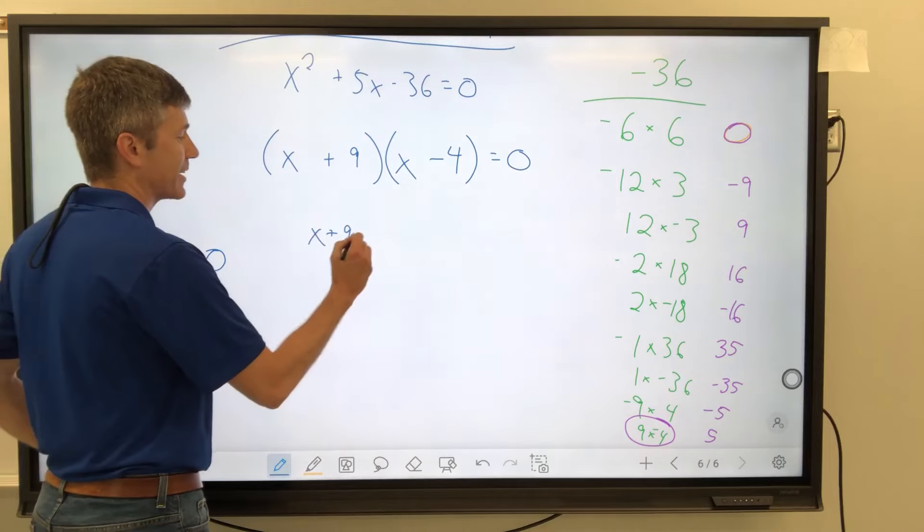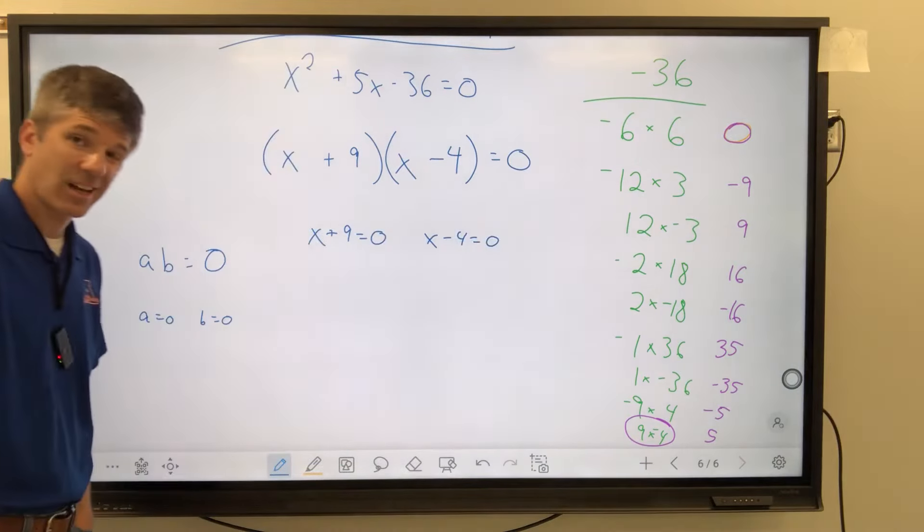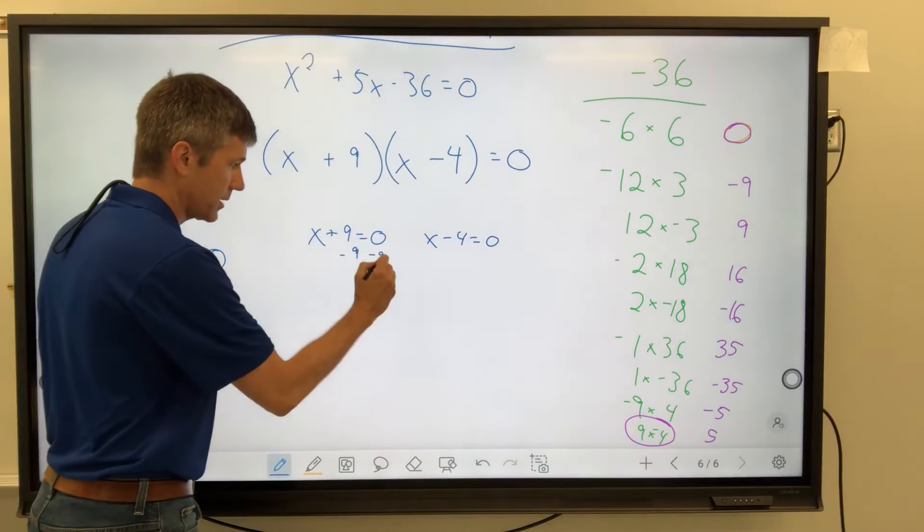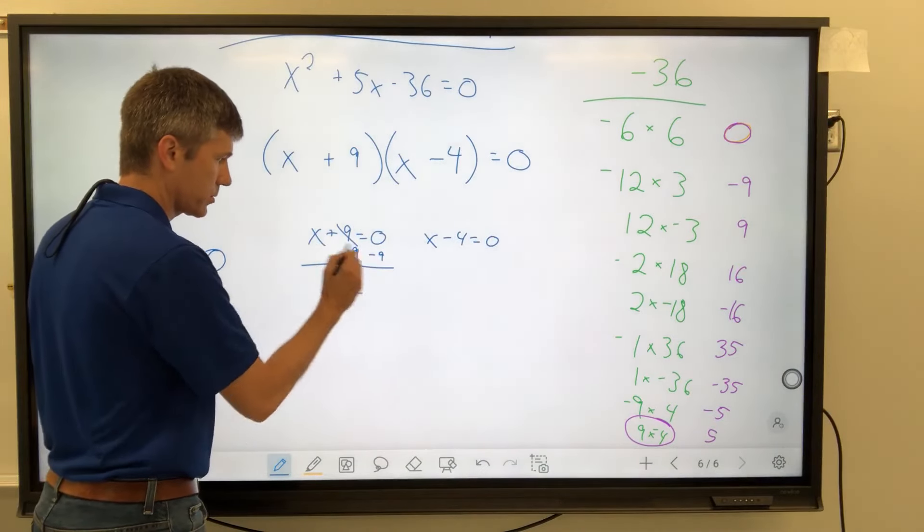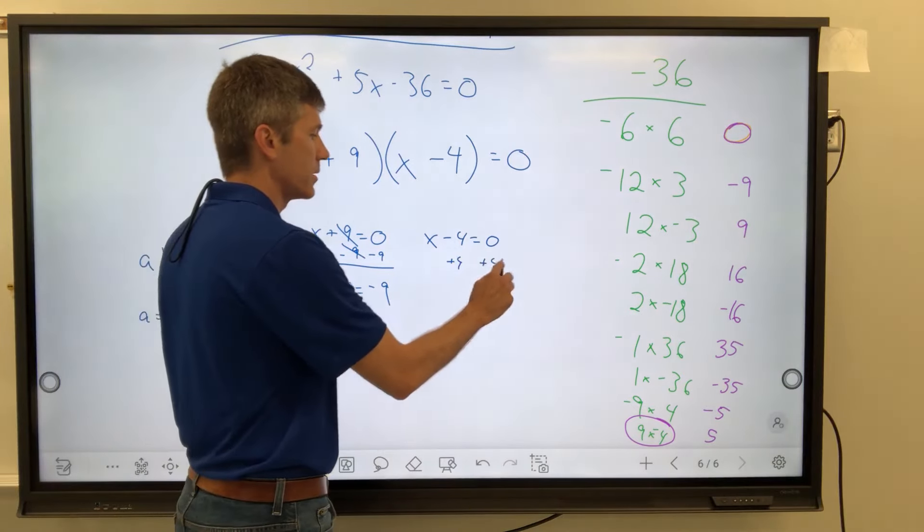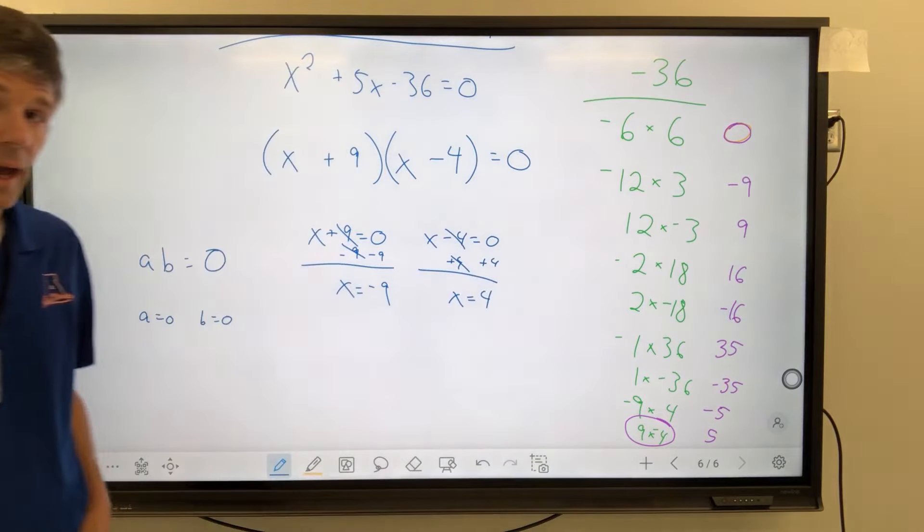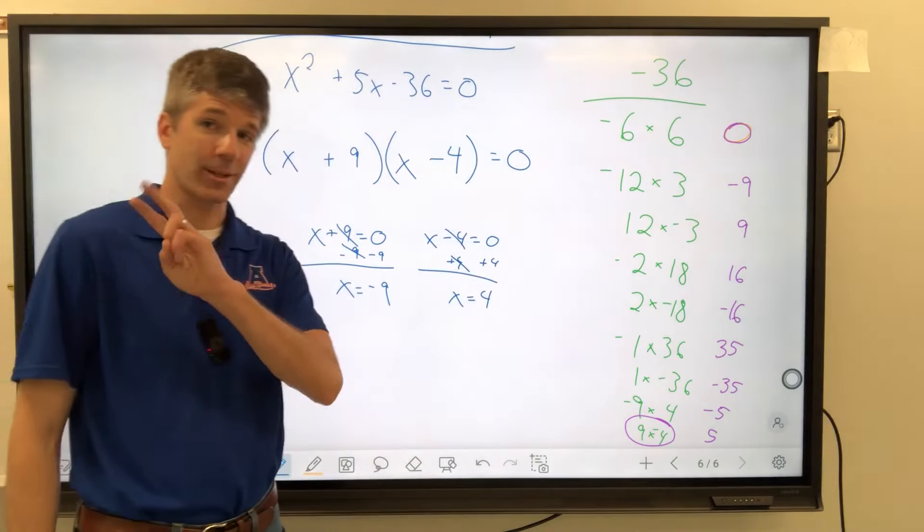X plus 9 equals 0 or X minus 4 equals 0, which means I can solve both of these. Let's subtract 9 from both sides. X equals negative 9. Good to know. We're going to add 4 to both sides here. X equals positive 4. Okay. We have two solutions, it looks like.